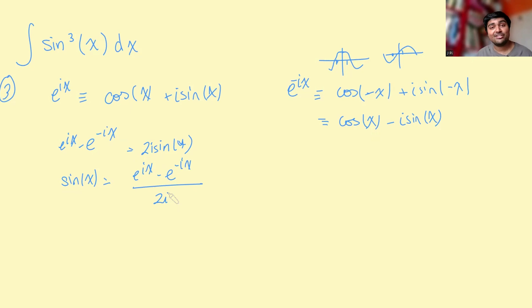Great. Now what I'm going to do is just cube both sides. So sine cubed x is simply e to the ix minus e to the minus ix cubed all over 2i cubed, which will be 8i cubed.